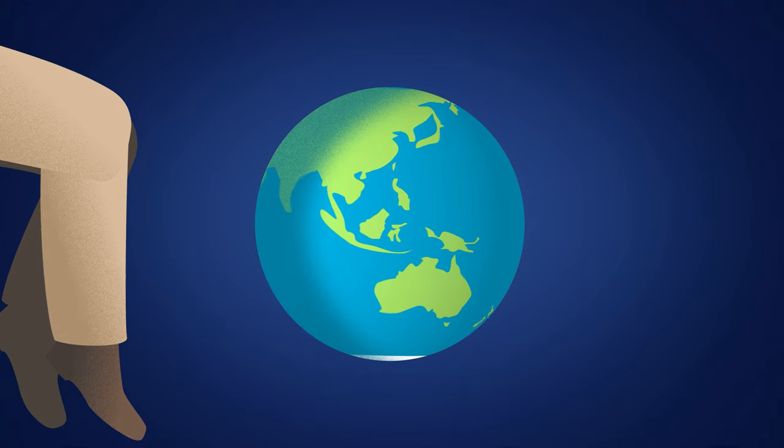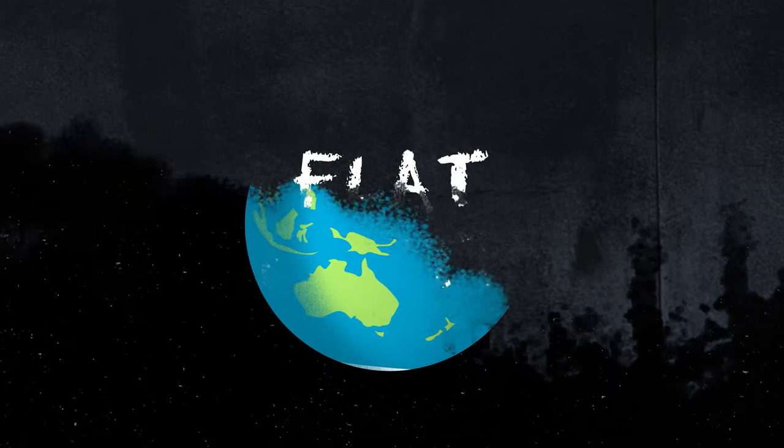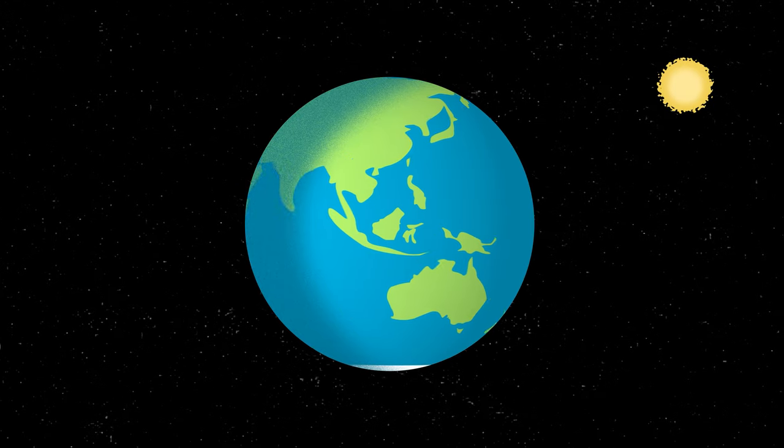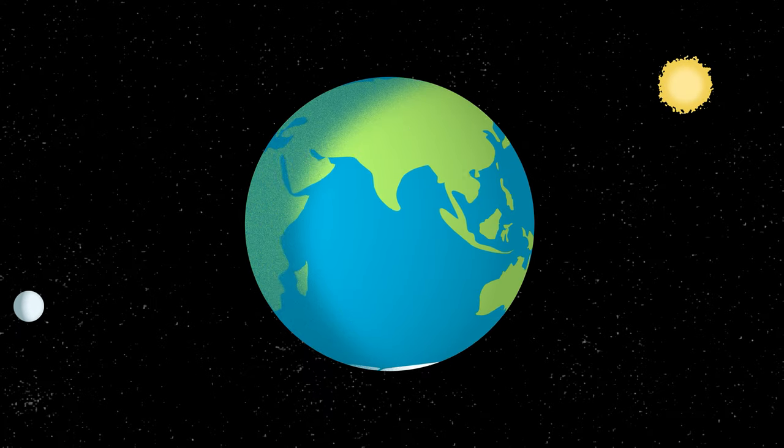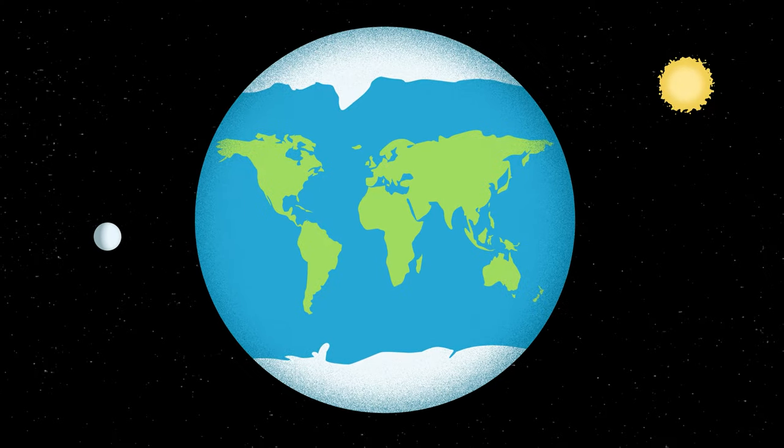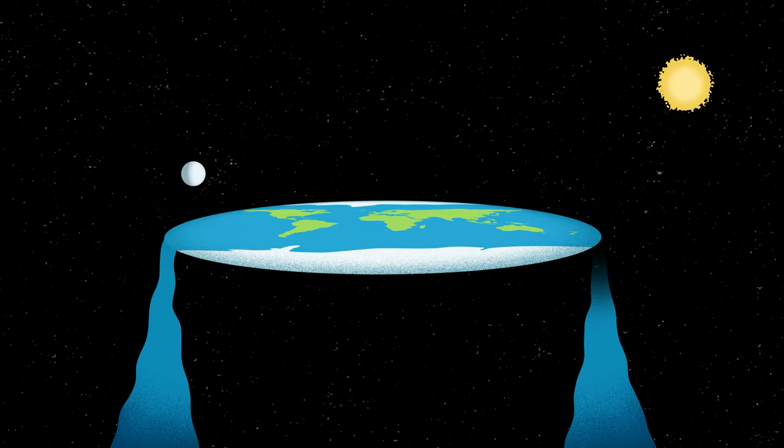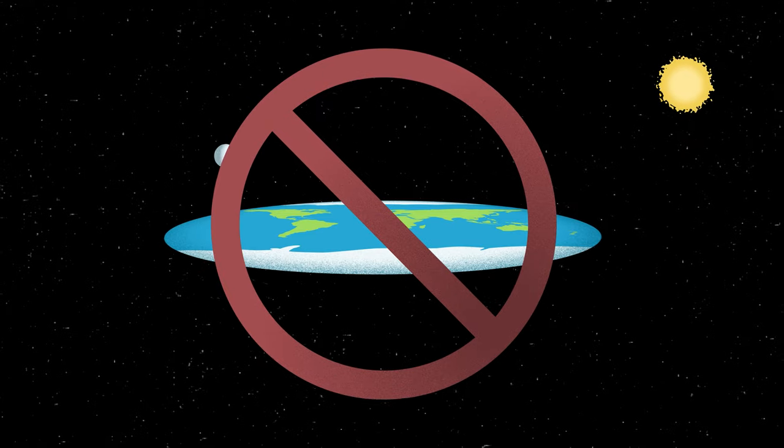A lifetime of indoctrination has given us a knee-jerk reaction to certain terms. Because the heliocentric globe is all we have ever known, when someone suggests that our creation is flat, we imagine some disk floating in outer space, perhaps with water flowing off the edge. This is not biblical cosmology.